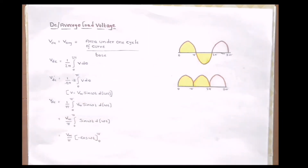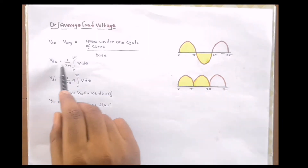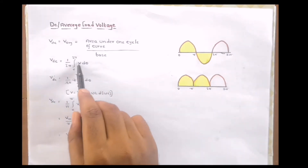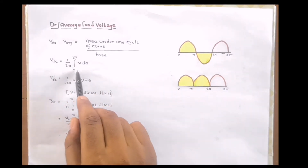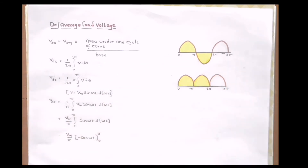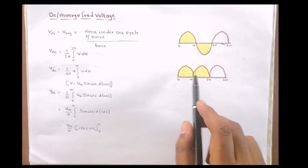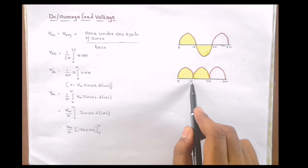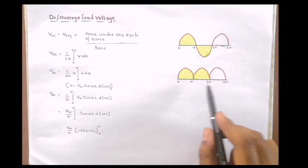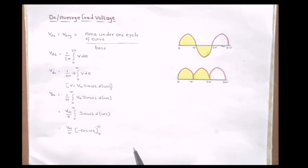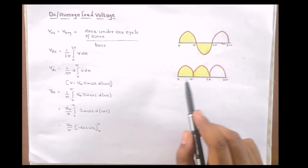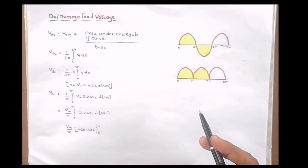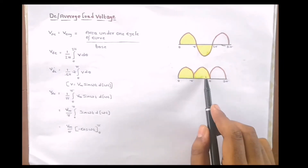So we can write Vdc = (1/2π) × ∫V dθ between the limits 0 to 2π. In this output waveform, whatever output we get from 0 to π, the same output we get from π to 2π. So instead of integrating from 0 to 2π, we integrate from 0 to π and multiply by 2.